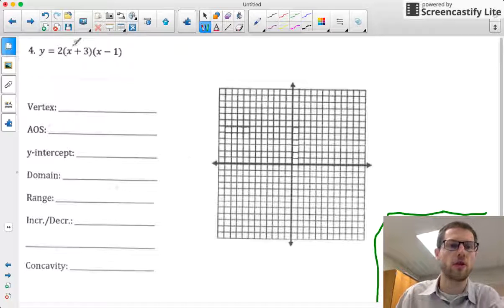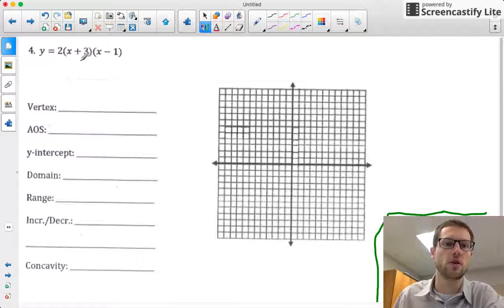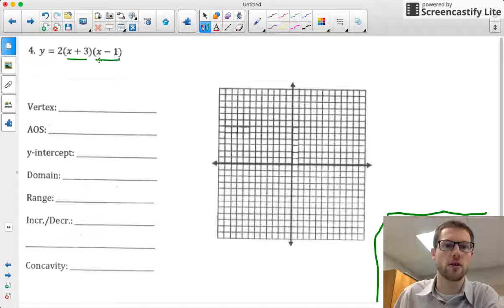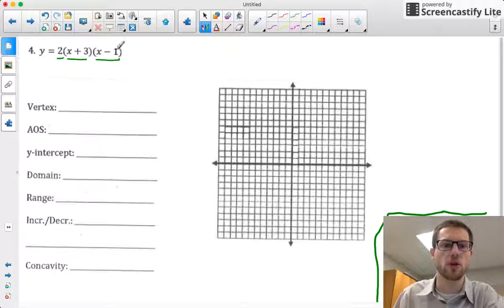Alright, so for this problem we're trying to graph y = 2(x + 3)(x - 1). This is factored form. Here's one factor, here's another factor, and really 2 is a factor as well. When we're graphing in factored form, the first thing we need to do is establish what our roots are.